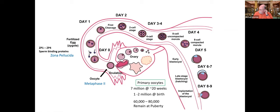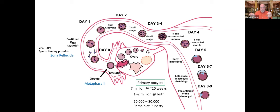Primary oocytes are cells that have gone through the first stage of meiosis — they've done the segregation and assortment. One of those cells becomes the mature oocyte, which is the larger portion; the other side is just a small DNA portion that is lost. Those cells are arrested at that stage.